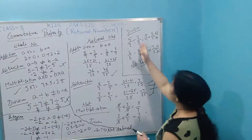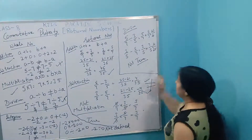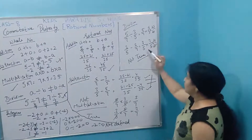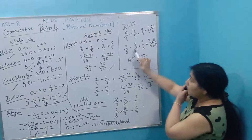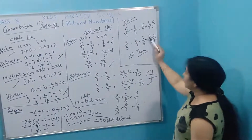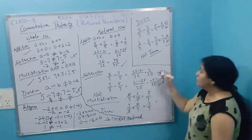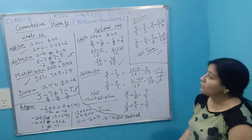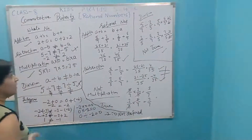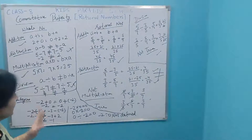For division of rational numbers: 5 by 7 divided by 3 by 5 — when you change division to multiplication, you take the reciprocal of the right-hand side. The reciprocal of 3 by 5 is 5 by 3. In the other case, 3 by 5 divided by 5 by 7 gives 7 by 5. Both results are not equal, so commutative property is not true under division.